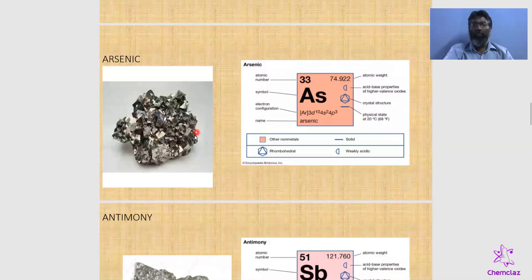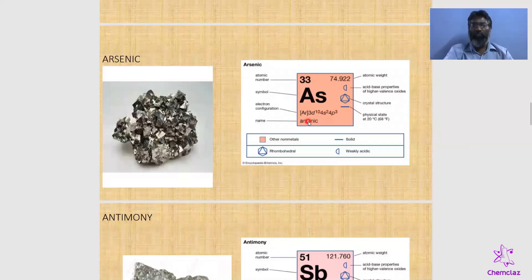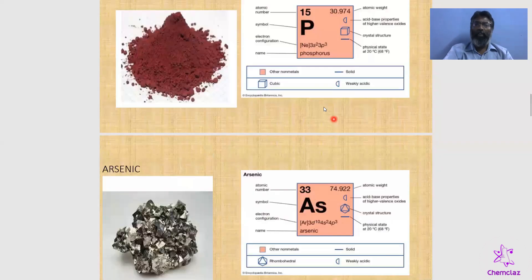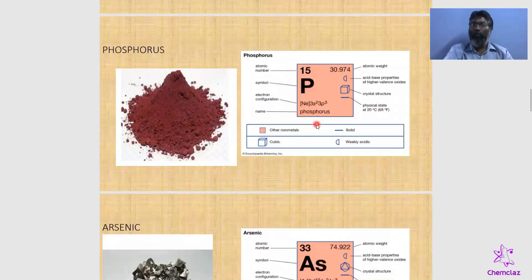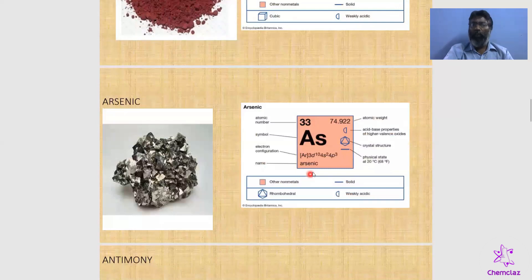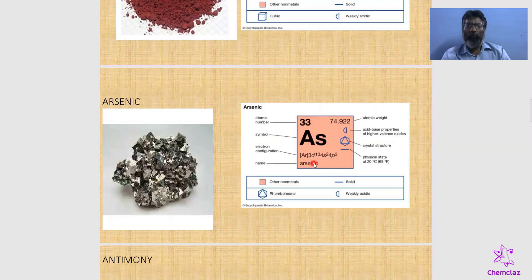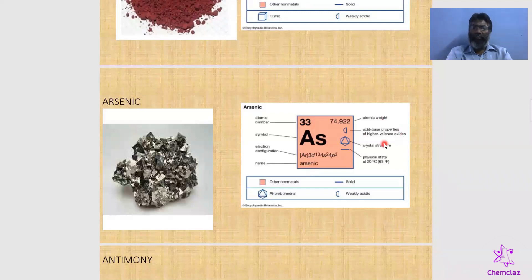Arsenic is a metalloid, but its non-metallic nature is predominant. It looks like a metal but non-metallic character dominates. Atomic number 33, configuration [Ar] 3d¹⁰ 4s² 4p³. In nitrogen there is no d-orbital; in phosphorus, the d-orbital exists but is empty; but in arsenic, the 3d-orbital is completely filled (3d¹⁰). This presence of 3d¹⁰ electrons distinguishes arsenic from lighter group elements. Atomic weight 74.9, weakly acidic nature, and crystal structure is rhombohedral.